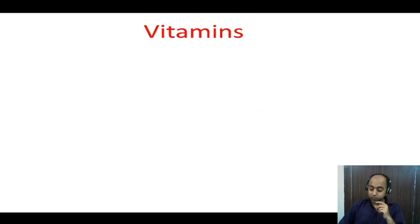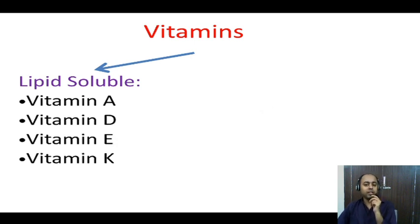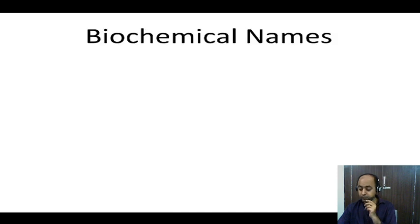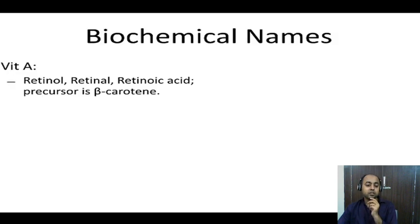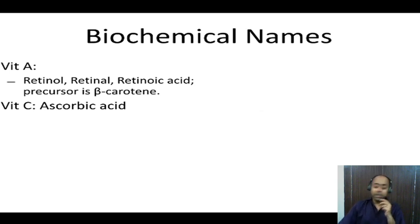The different types of vitamins: we have the lipid-soluble vitamins — vitamin A, D, E, and K — and then we have the water-soluble vitamins, the vitamin B complex and vitamin C. The biochemical names: vitamin A has three active forms — retinol, retinal, and retinoic acid. Remember, beta-carotene is the precursor, not vitamin A itself. Vitamin C is known as ascorbic acid.